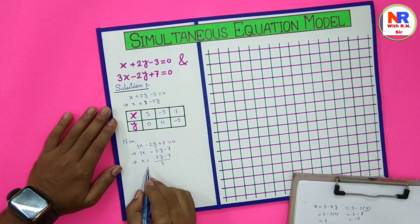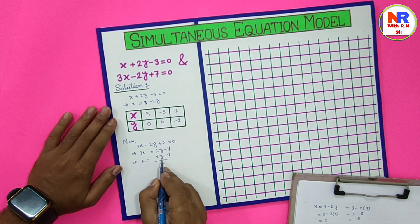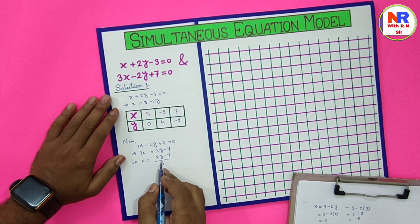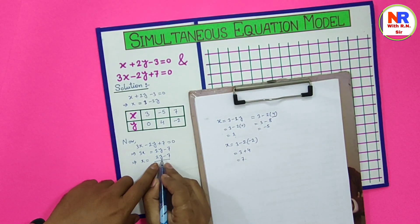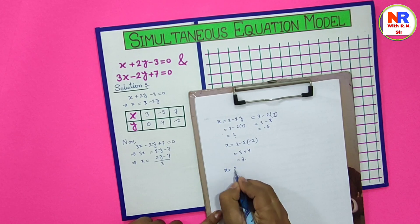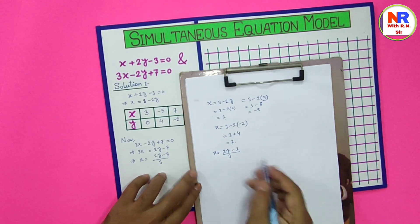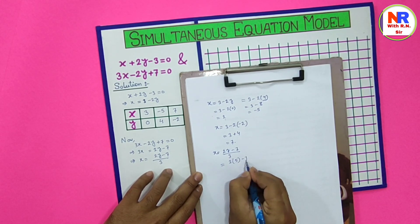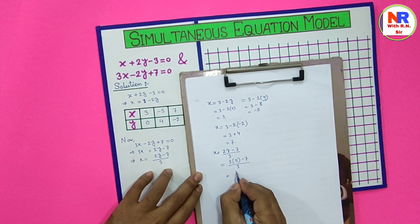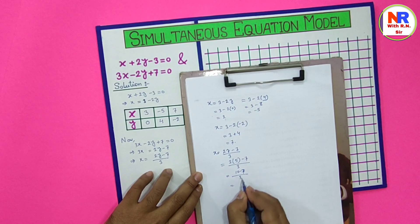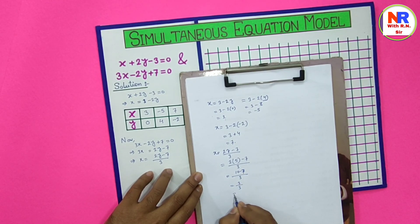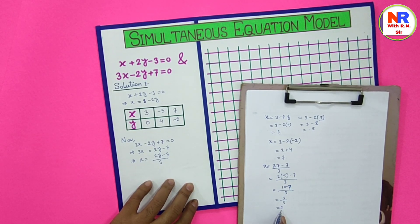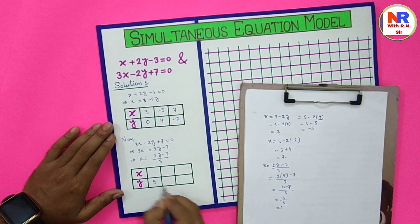Now we will find the values of x and y for this equation. We will try to find values in integer form. Suppose y equals 5. Then x equals 2 multiply 5 minus 7 divided by 3, that is 10 minus 7 divided by 3, which is 3 by 3, equal to 1. So for y equals 5, we get x equals 1.